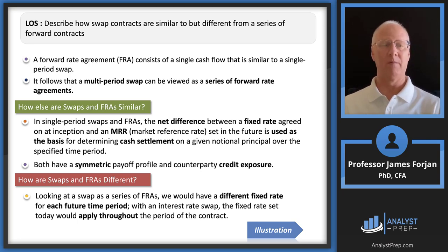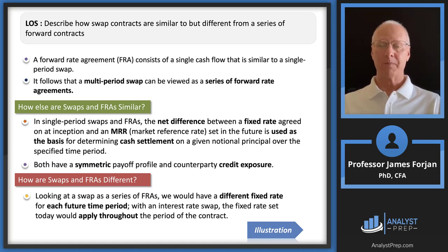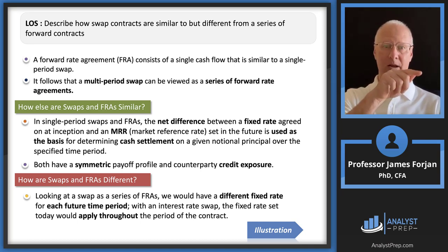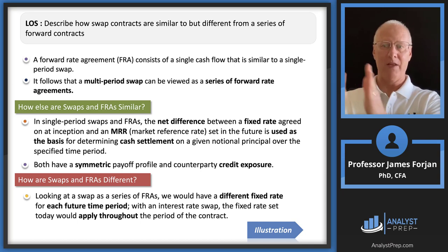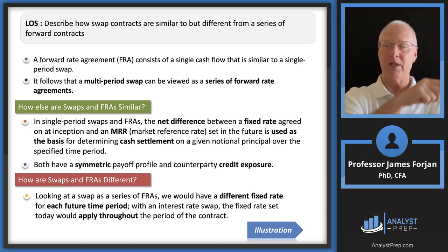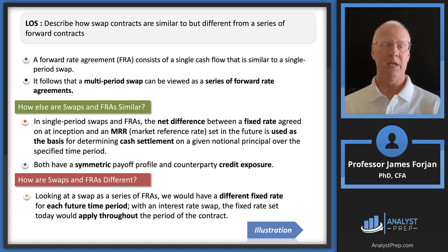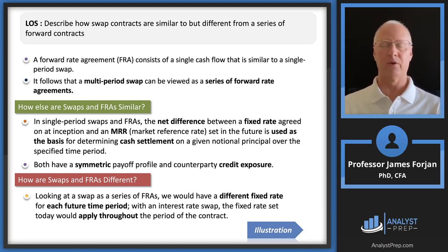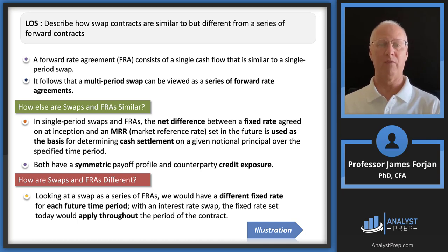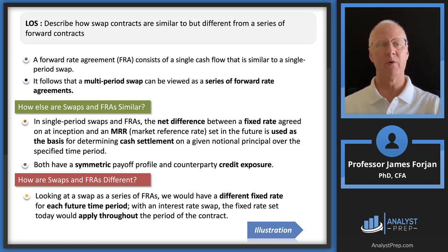Here's a great exam question: how are swaps and forward rate agreements different? With a series of FRAs, you have an FRA for one period and then another one, but the fixed rate here is going to be different than the fixed rate there. Whereas in the swap, this fixed swap rate is fixed throughout the entire five-year tenor. So with a series of FRAs, the owner is still exposed to a different layer of interest rate risk. Everybody who enters an interest rate swap is exposed to interest rate risk, but with a series of FRAs, it's a different way of looking at it.